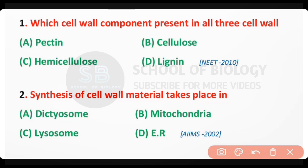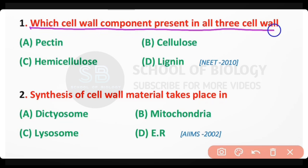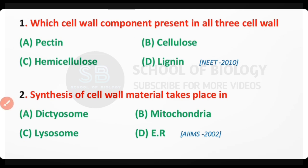Question number one: Which cell wall component is present in all three cell walls? Options: pectin, cellulose, hemicellulose, lignin. The correct answer is option C. Hemicellulose is present in all three cell walls — the primary wall, secondary wall, as well as the tertiary wall.